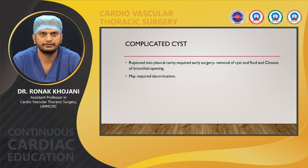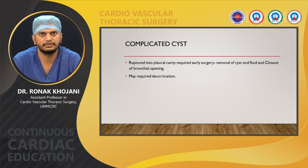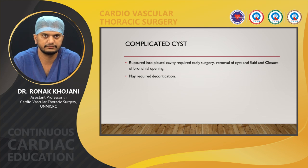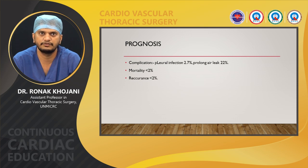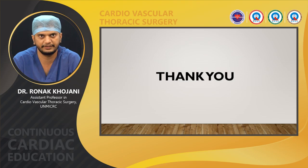For complicated cysts ruptured into the pleural cavity, early surgery is required for removal of the cyst and fluid, closure of the bronchial opening, and possibly decortication. Regarding prognosis, complications occur in 2.7% of cases, including pleural infection and prolonged air leak in 22%. Mortality is less than 2% and recurrence is less than 2%. Thank you.